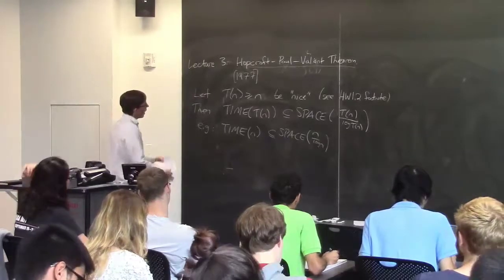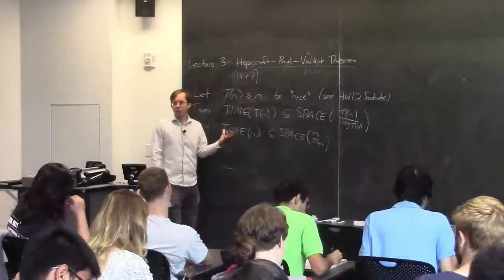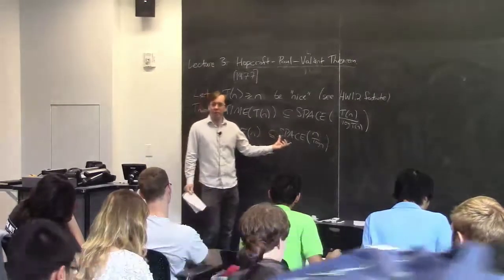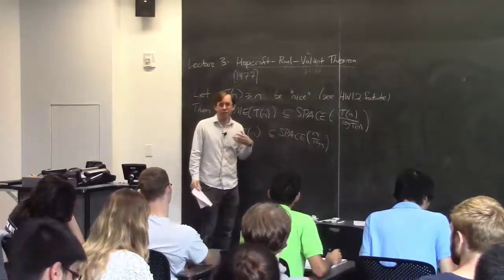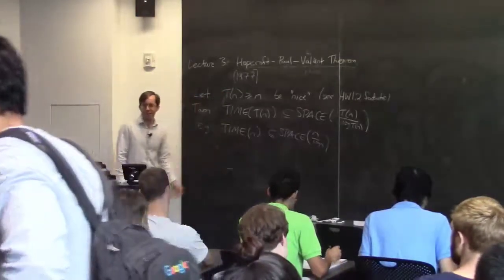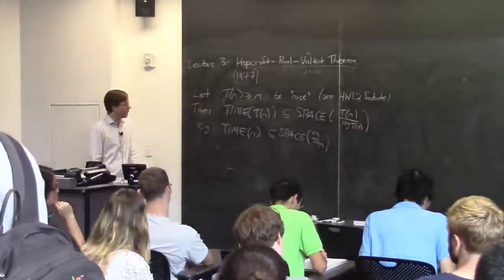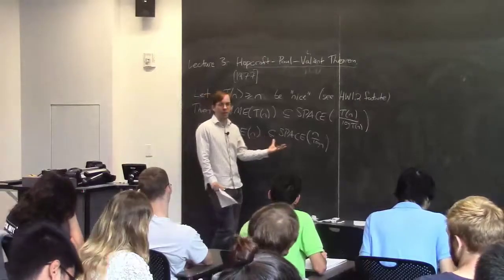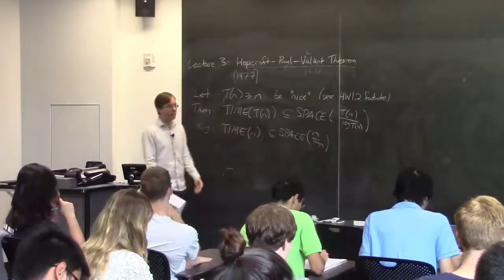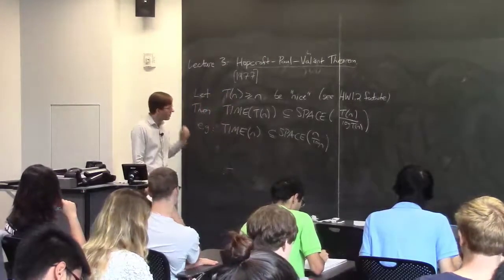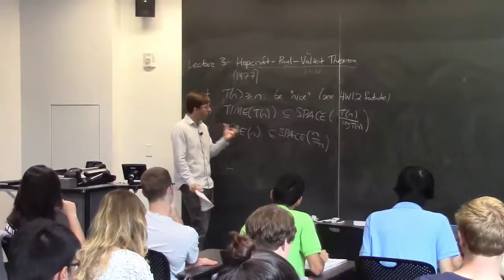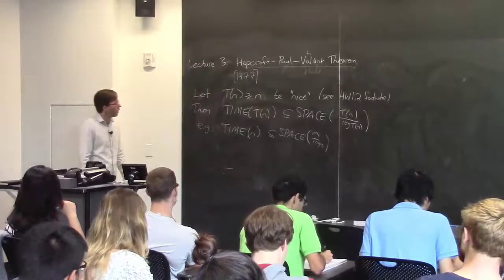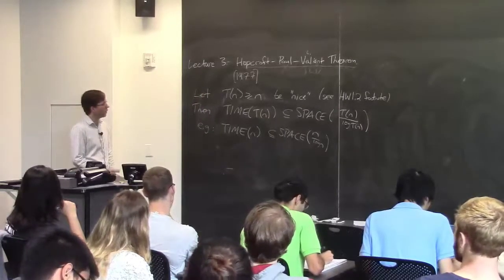That's pretty cool, right? We know kind of trivially that any problem you can solve in linear time you can solve with a linear amount of space, because a linear-time Turing machine only has time to access a linear amount of space — so that's trivial. But this says you can save a non-trivial amount of space: you can save a log n factor, so you'll never need the full amount of linear space, which is pretty cool.